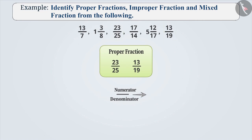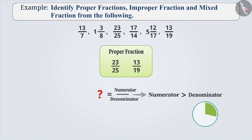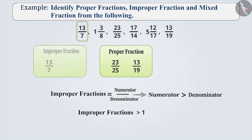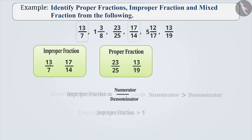Similarly, can you guess the type of fraction when the value of the numerator is greater than the value of the denominator? You got it right. Such fractions are improper fractions. The value of this fraction is greater than 1. So, among the given numbers, 13 by 7 and 17 by 14 are improper fractions.